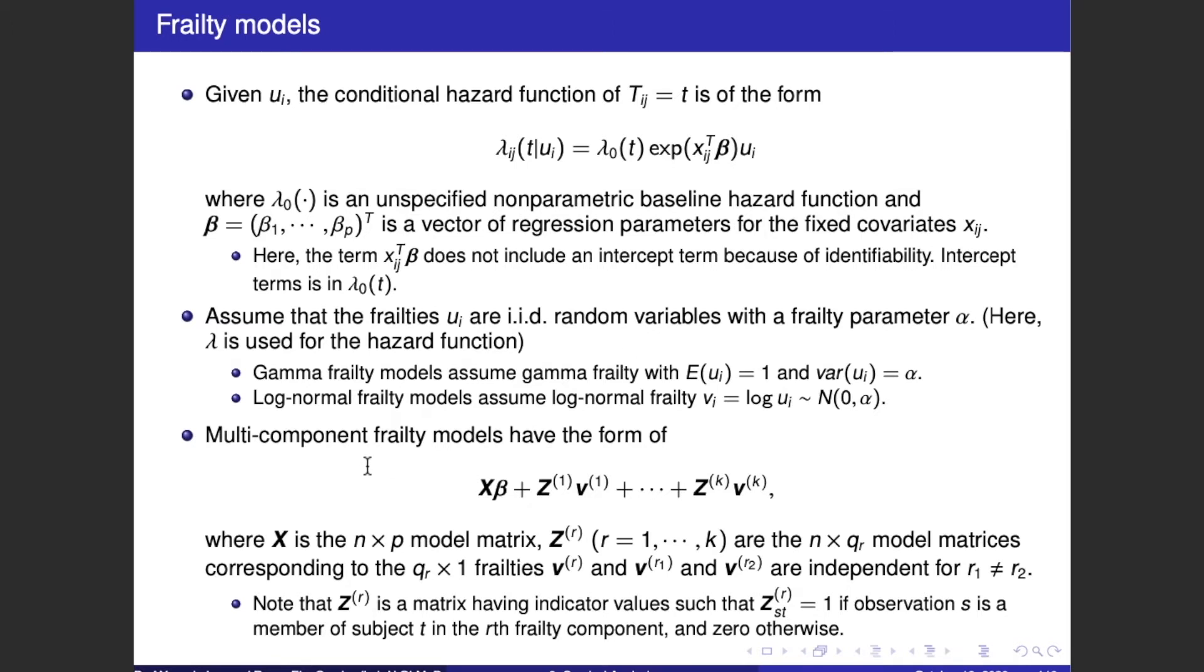Multi-component frailty models have the form X beta plus Z^(1) V^(1) plus ... plus Z^(K) V^(K), where X here is the n cross p model matrix.